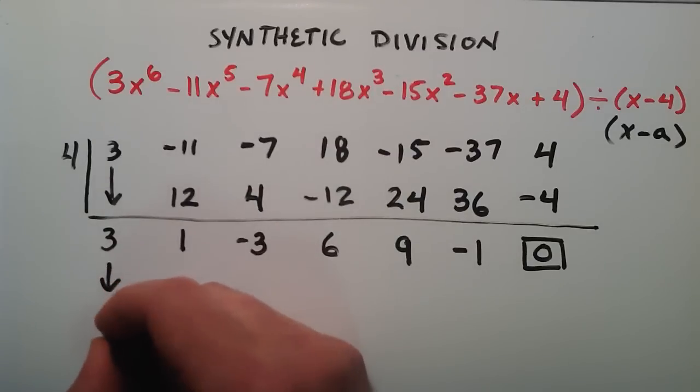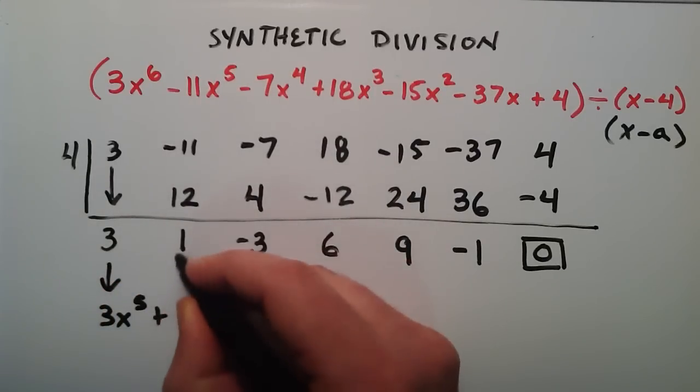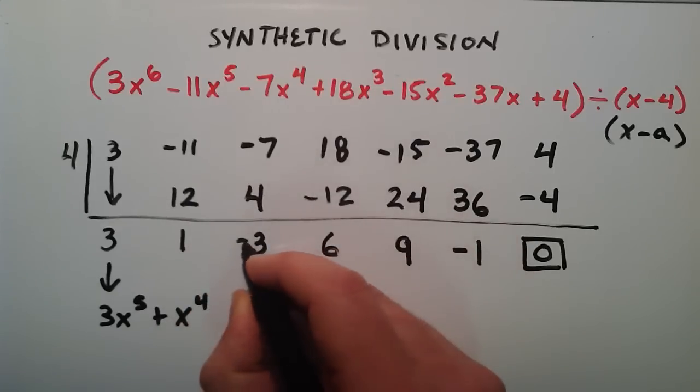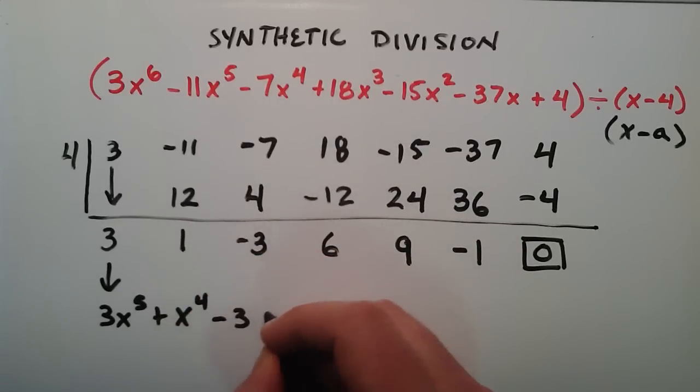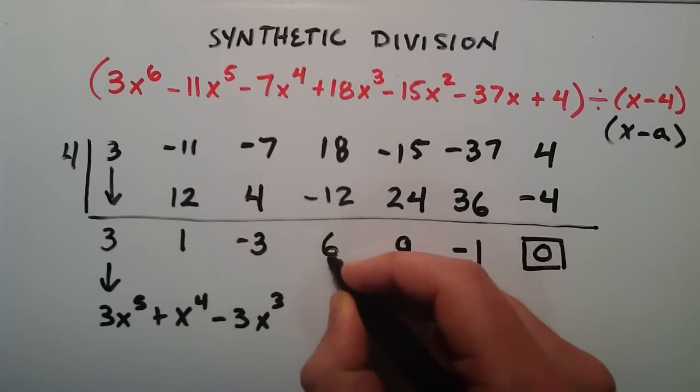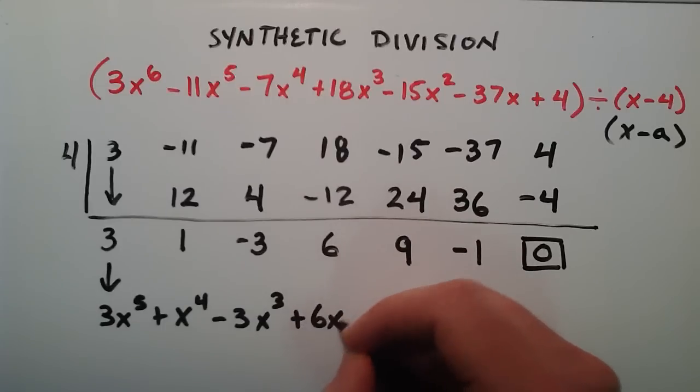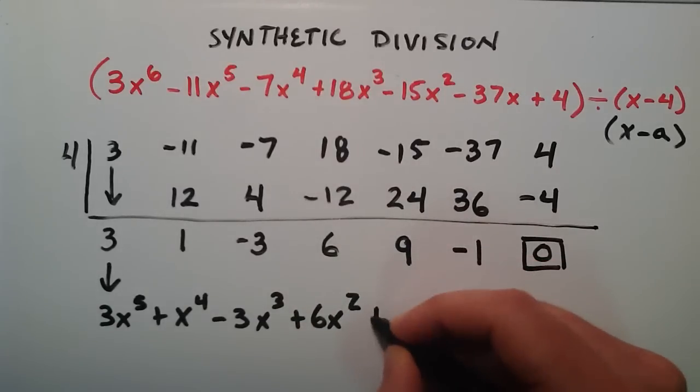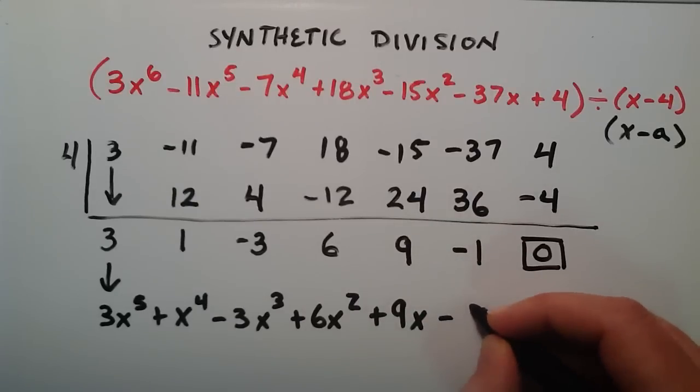So this basically becomes 3x to the 5th plus 1 times x to the 4th. And then this is minus 3x to the 3rd. And then we add the 6x squared plus 9x minus 1.